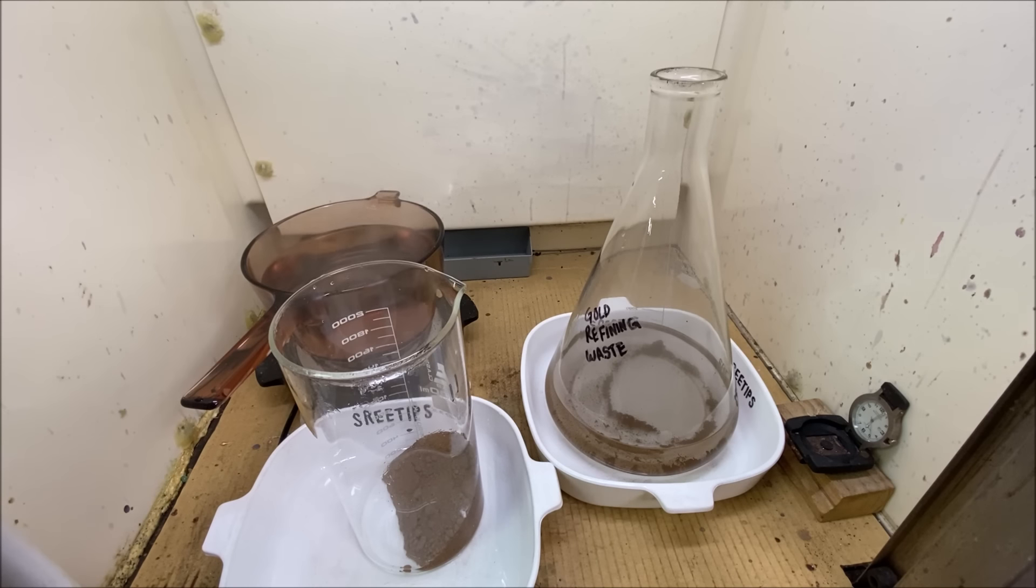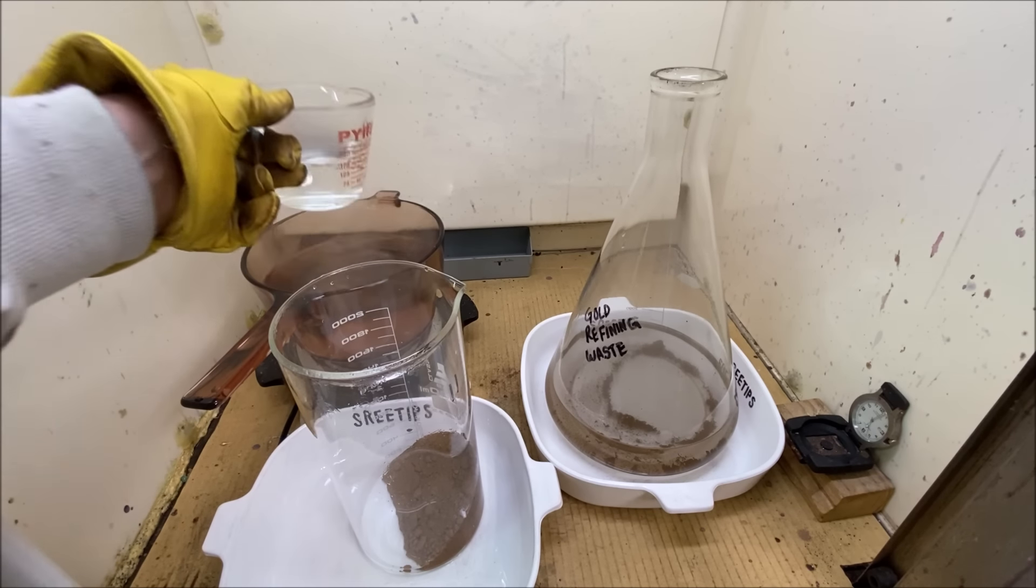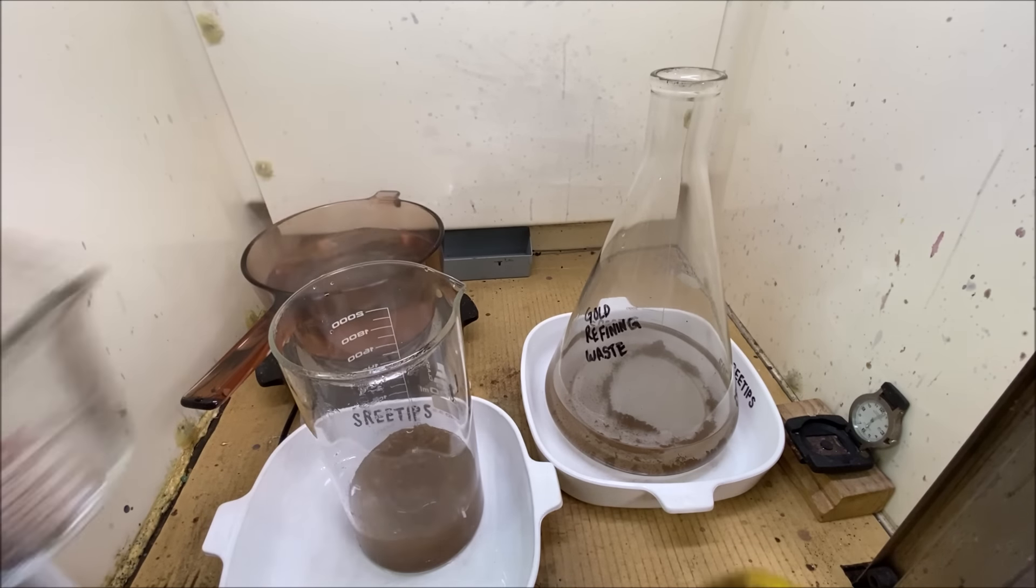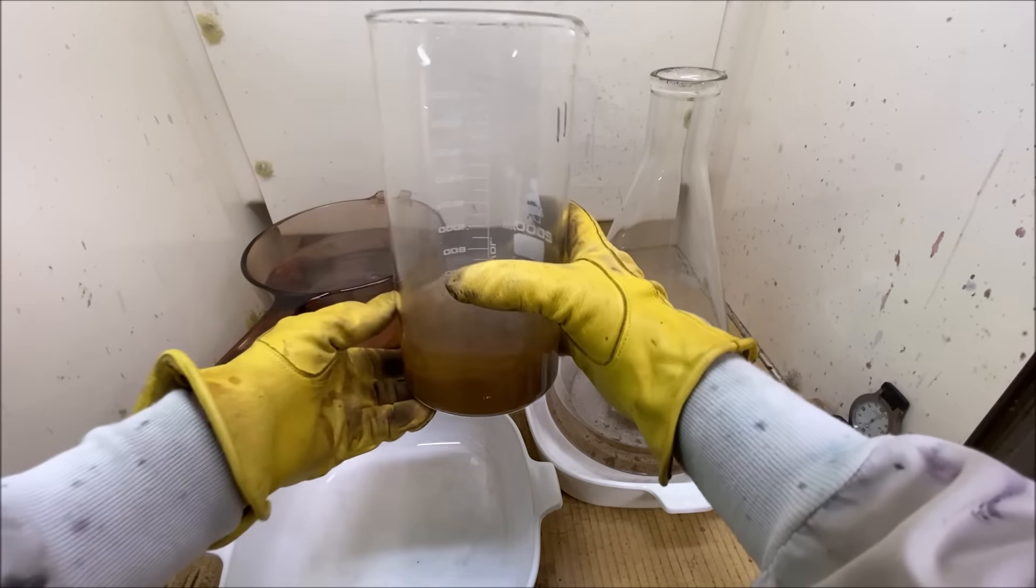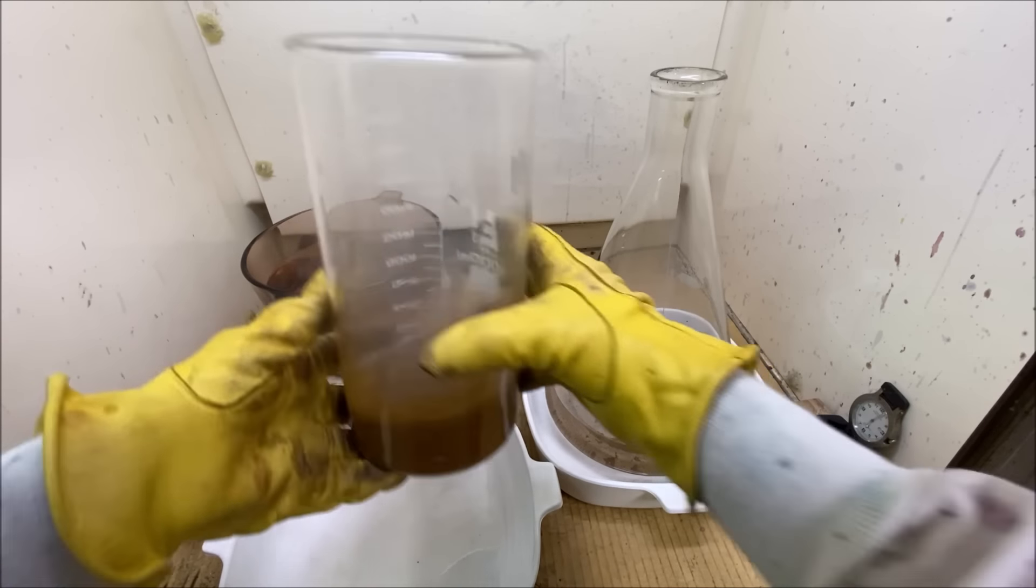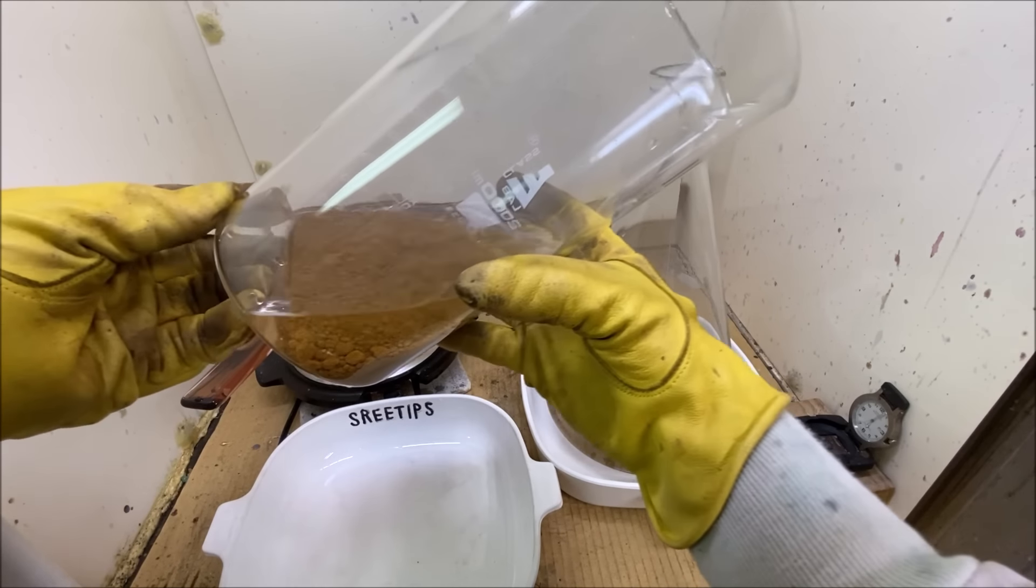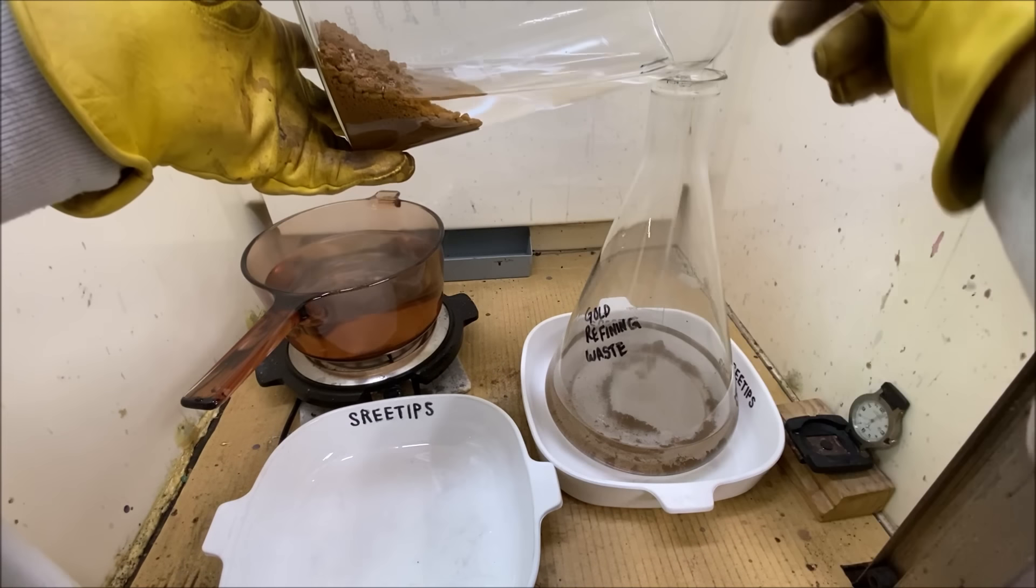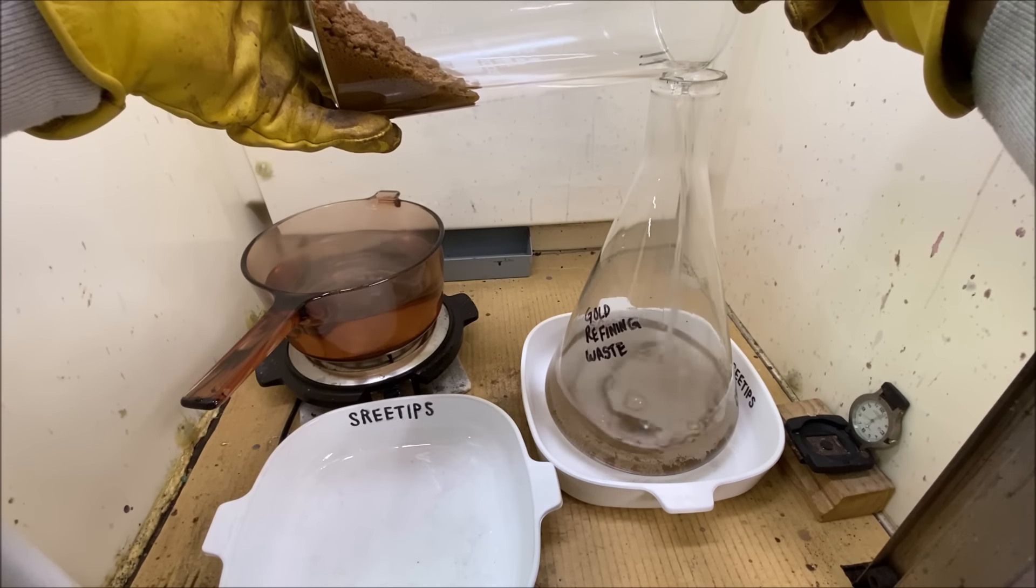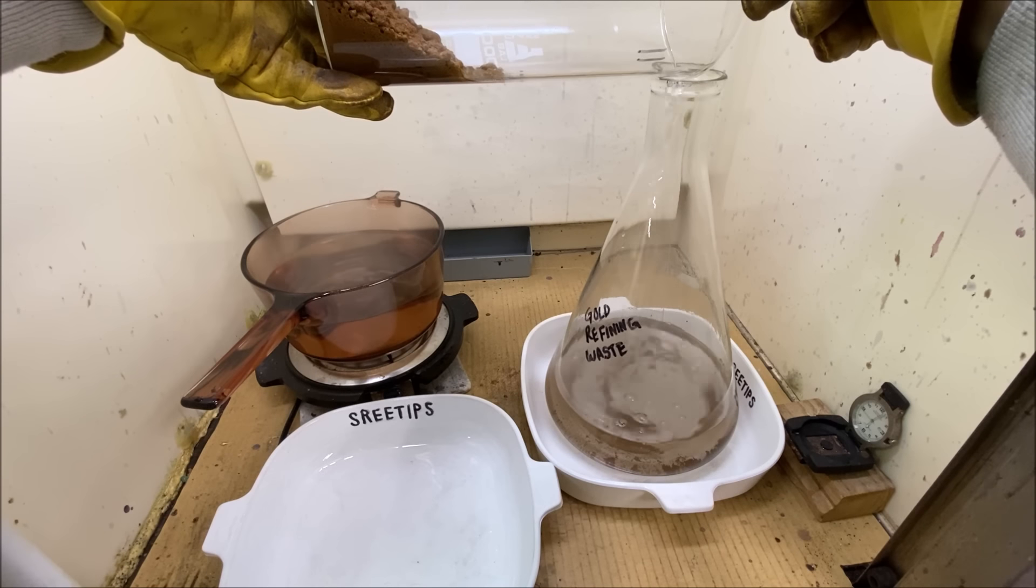I think I've got all the junk rinsed off of the gold now. We've done multiple hot water rinses. This is tap water back here and the gold is settling out real nice. I think we're at the place we go to the next step.